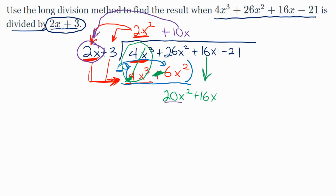Then you take that 10x and follow through and distribute it to the two terms out in front and write those products down below. So 2x times 10x would have given me 20x², and 10x times 3 would have given me 30x.